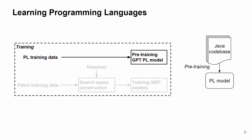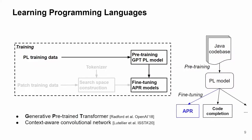The benefit is that existing NMT-based APR tools only use patches to train the NMT models, which only sees partial code snippets, while our programming language model is trained on millions of complete developer-written Java methods, which helps the programming language model to learn Java syntax and how developers write code. Then during fine-tuning, CURE combines the pre-trained GPT programming language model with a context-aware convolutional network as the entire APR model, and fine-tunes it with our patch training data.